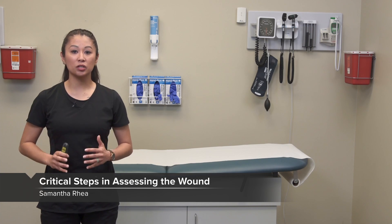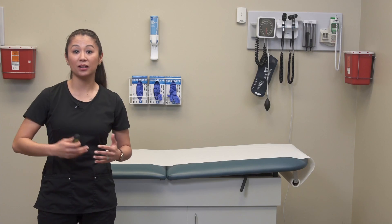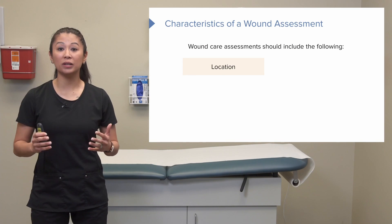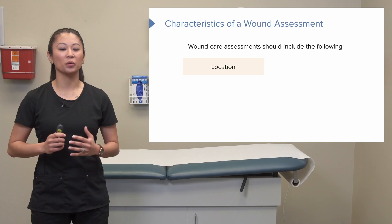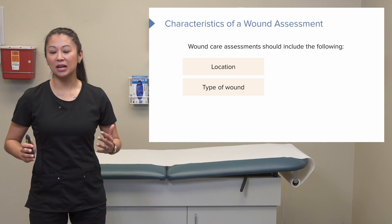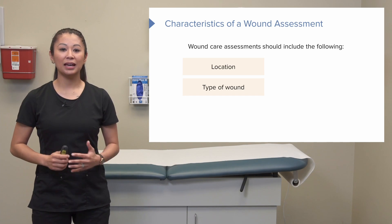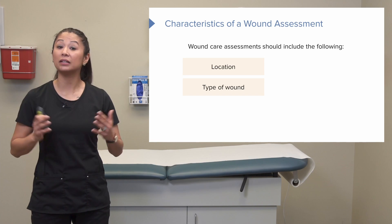Let's take a look at some characteristics in regards to wound assessment. There are six things on this slide that are important about how we assess and also how we document. Of course when we talk about wound care we need to know the location when we assess that wound, and the type — this could be an incision, a laceration, or abrasion. It's important to know the type of wound on assessment because that will affect how it heals.